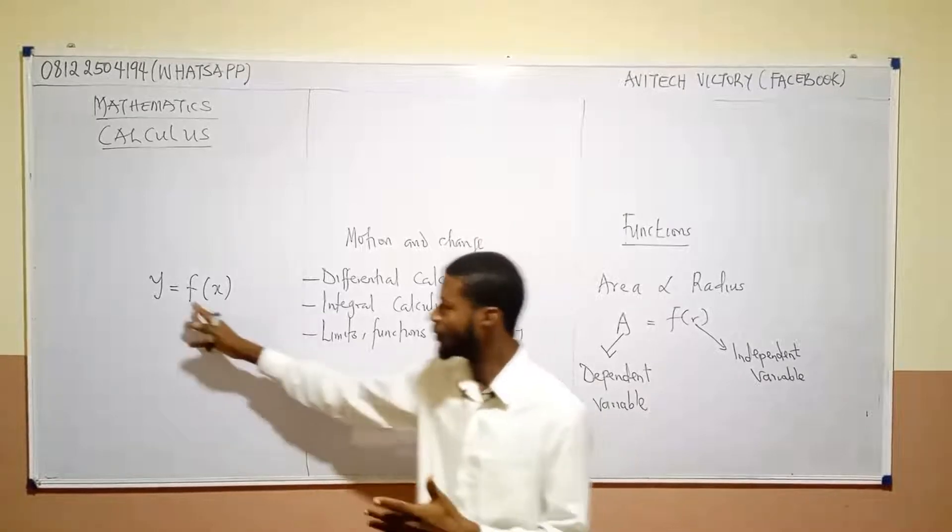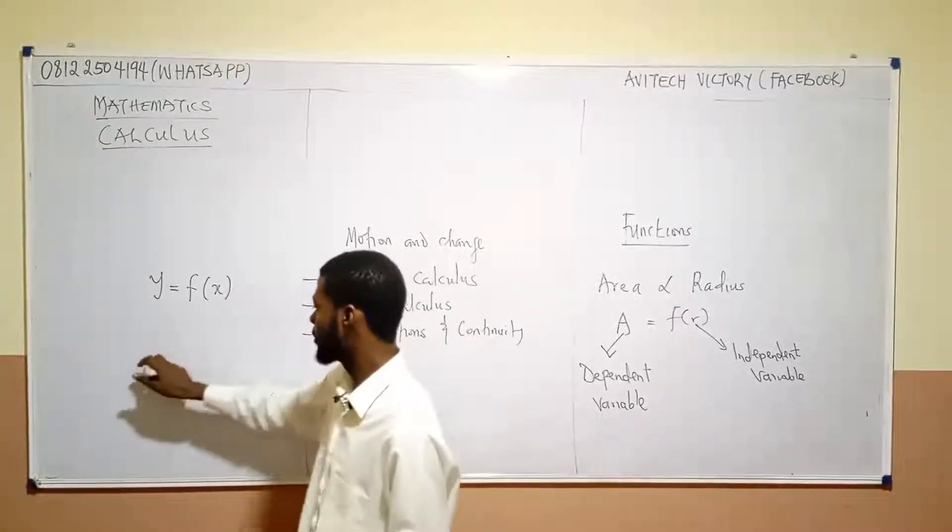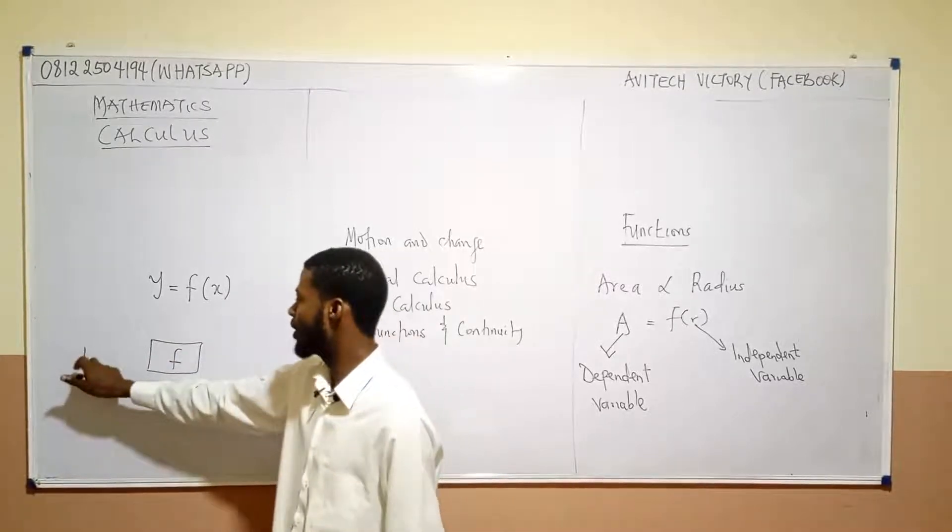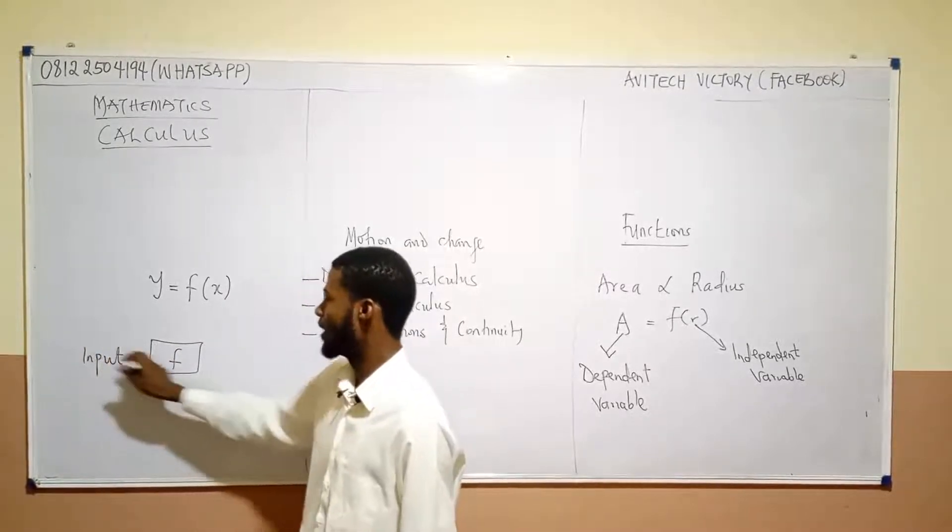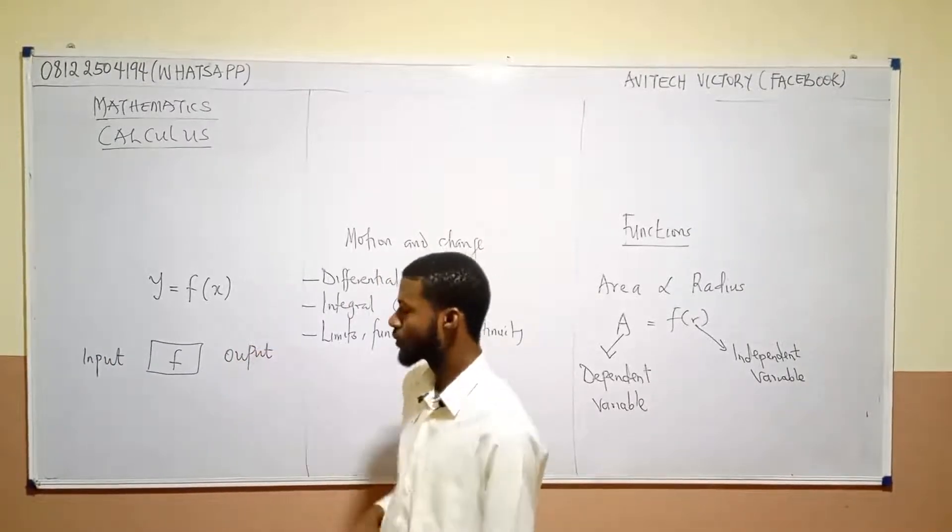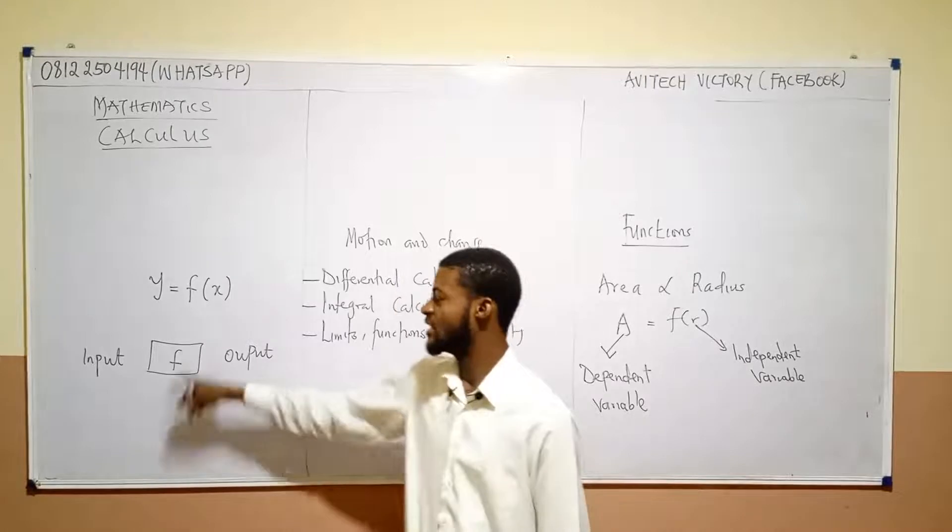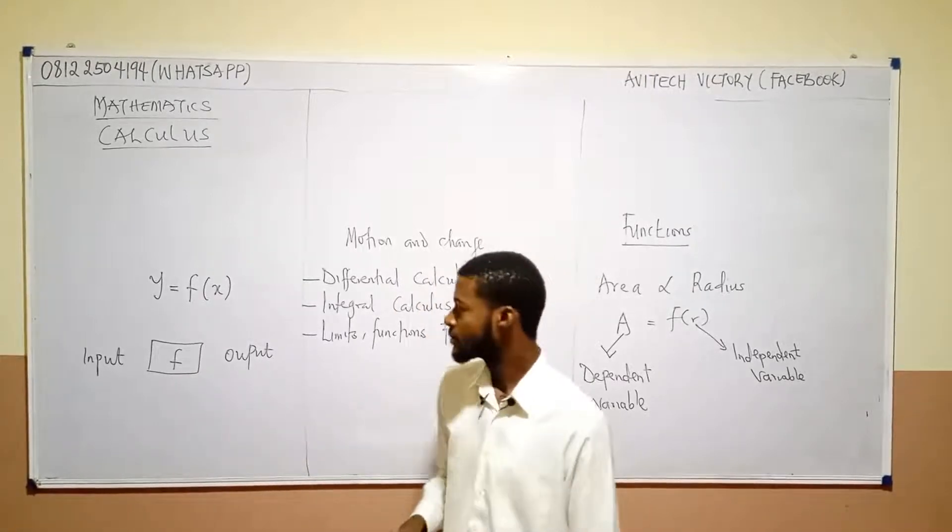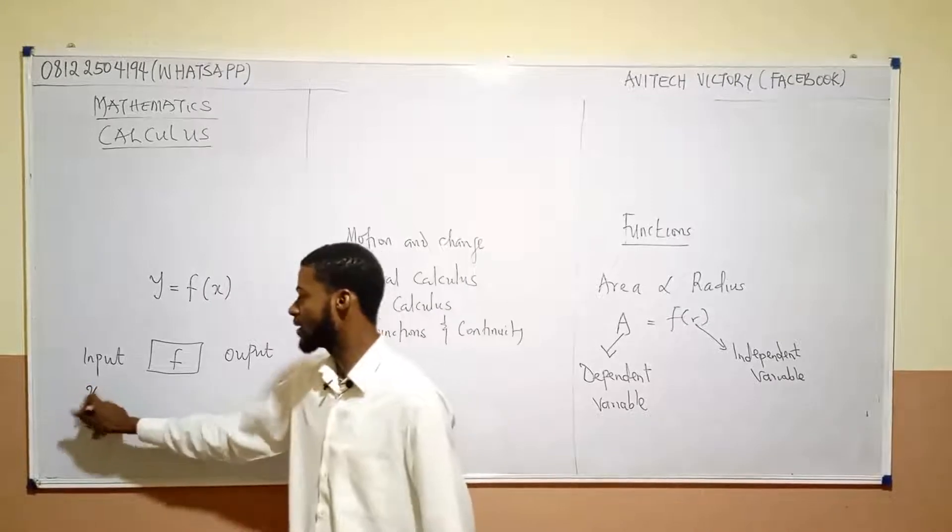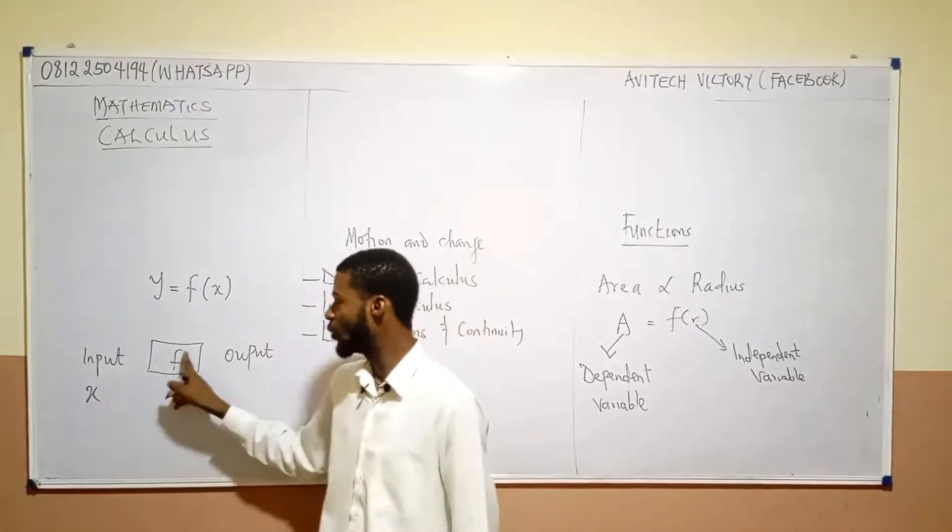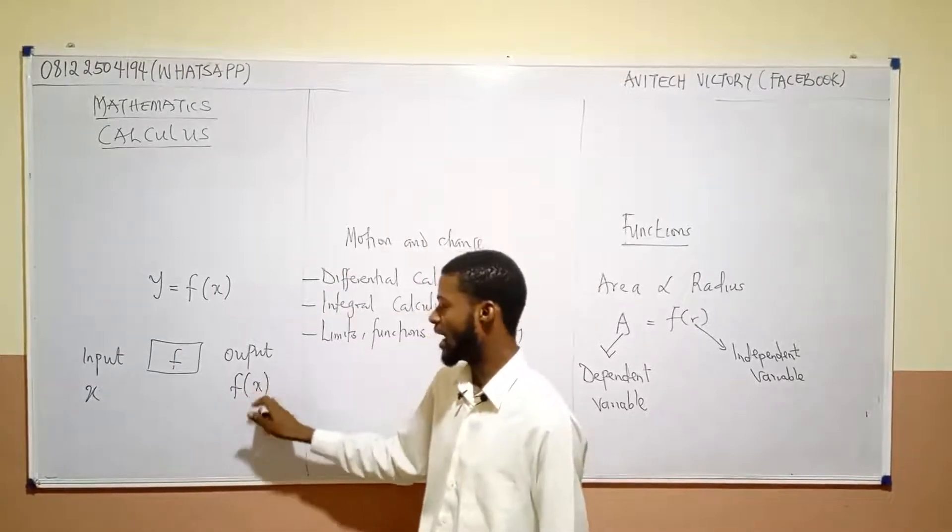So, what does f do? f is simply, let me put f this way. If this be f, we'll have an input. And definitely, we're going to have an output. So, if f is the name of a function, if f is the name of something, then we input x into f. If we input x into f, our results will become f of x.